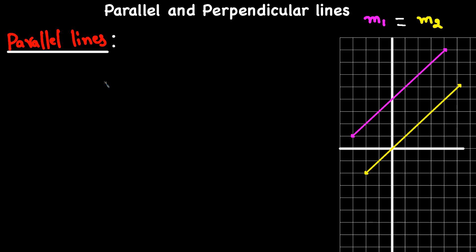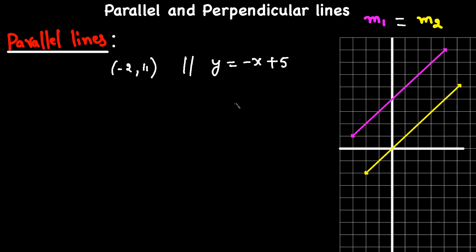They can ask questions in different ways, but most commonly they ask: write an equation of a line that passes through a point. For example, write an equation of a line that passes through point (-2, 11) and is parallel to the line y = -x + 5. They give us one equation and we need to find another equation which is parallel to it and passes through the given point.